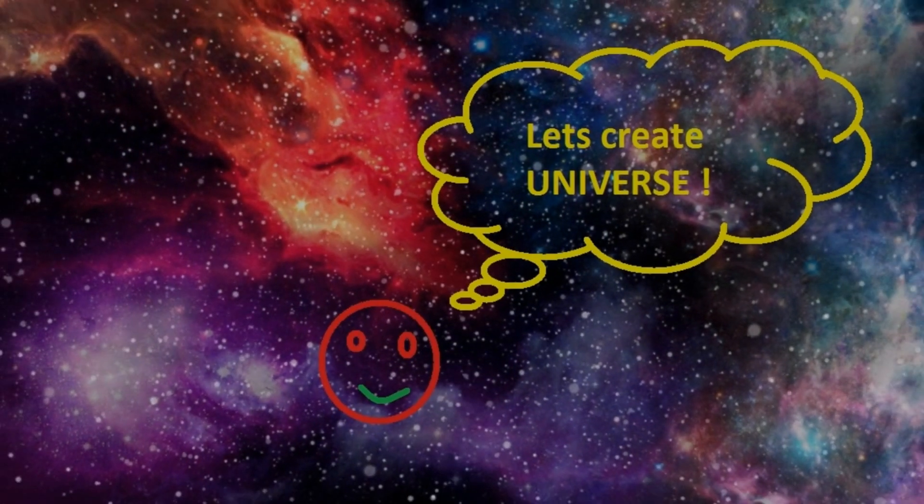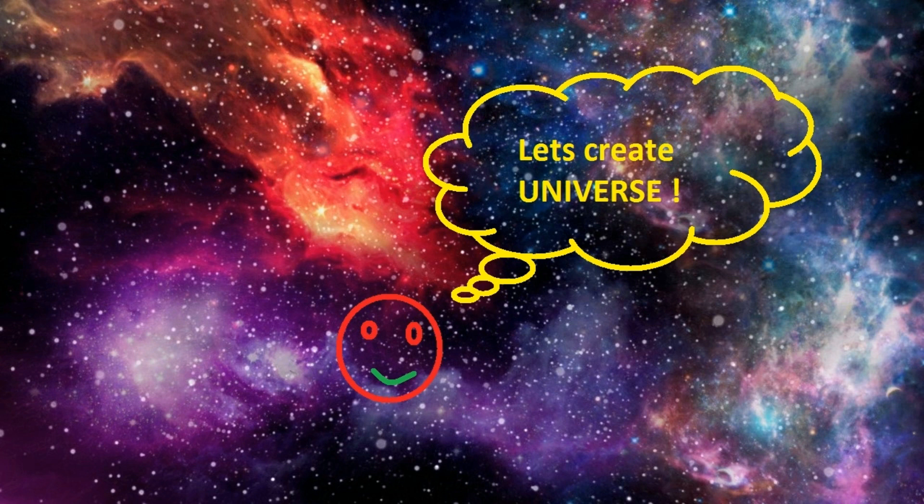As far as scientists know, there must have been one tiny extra matter particle for every billion matter-antimatter pairs. And this tiny amount of matter has grown to the scale of the universe.